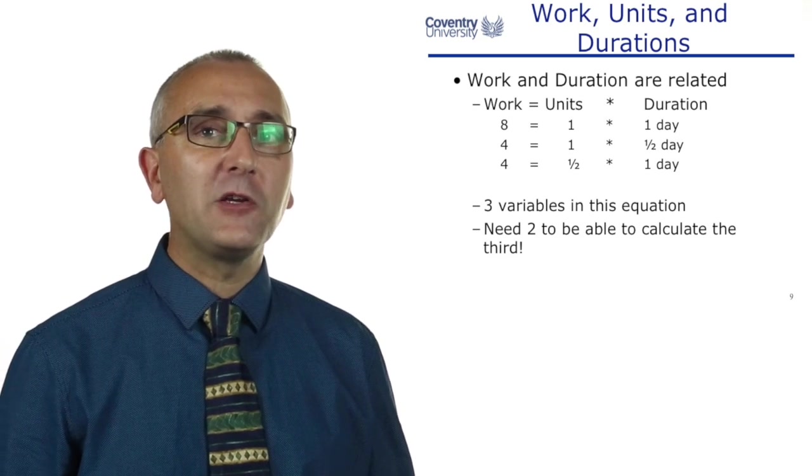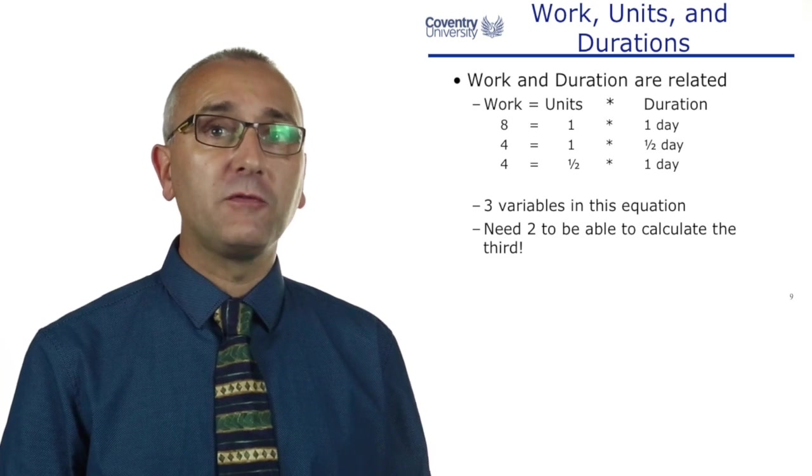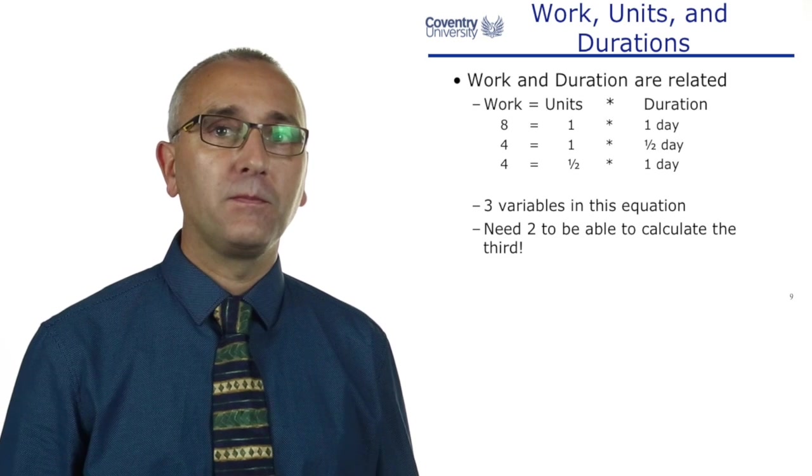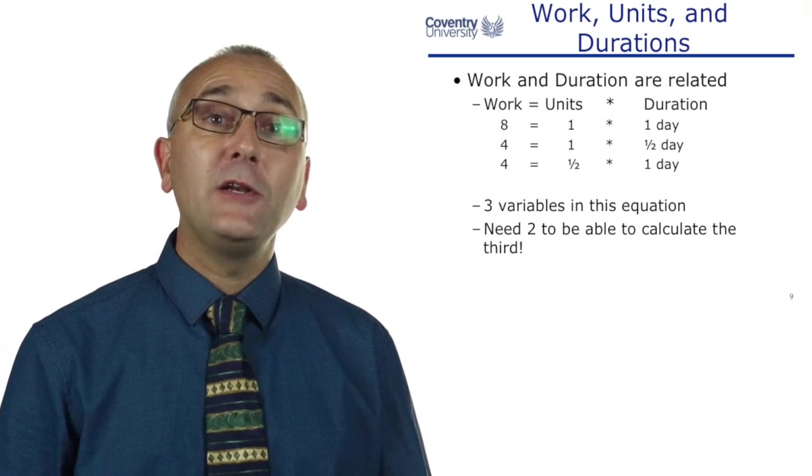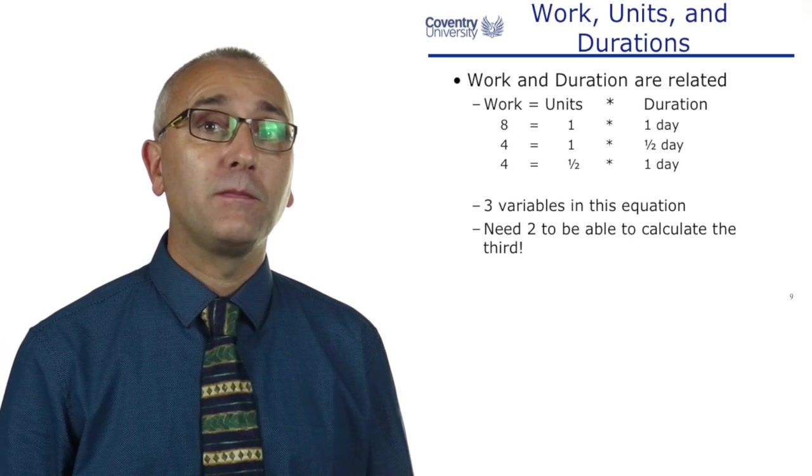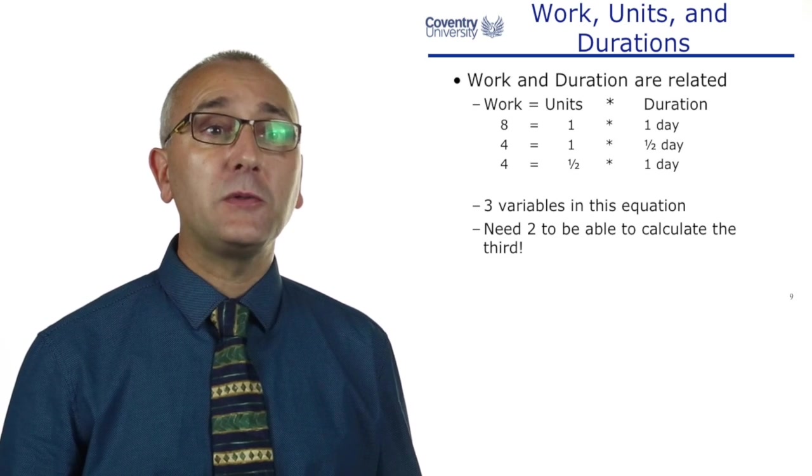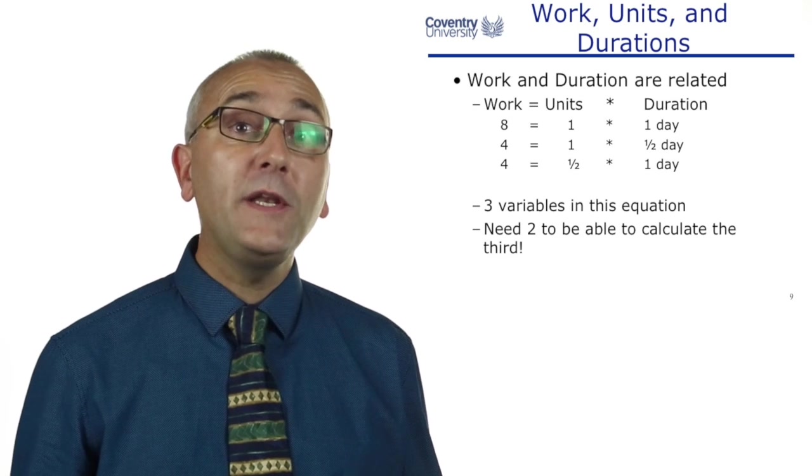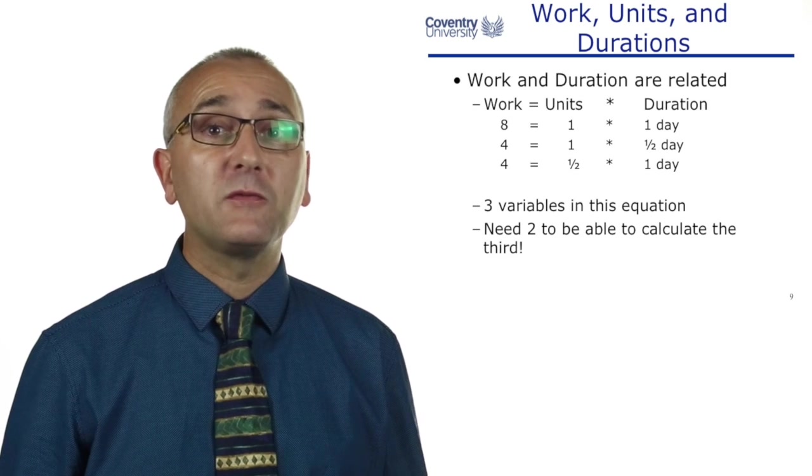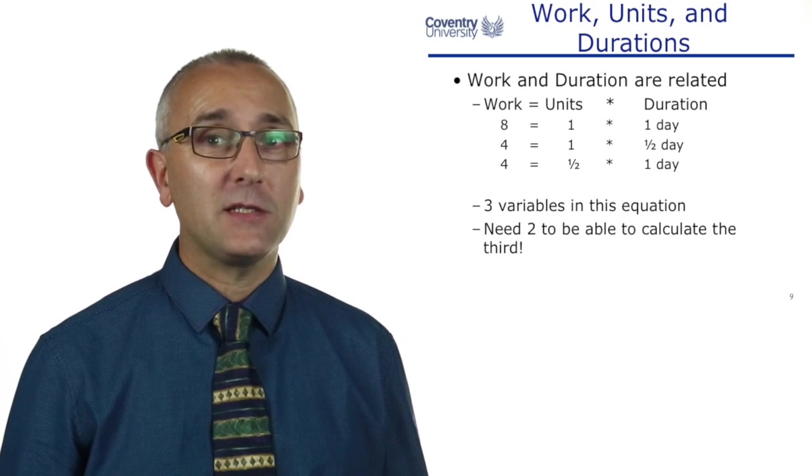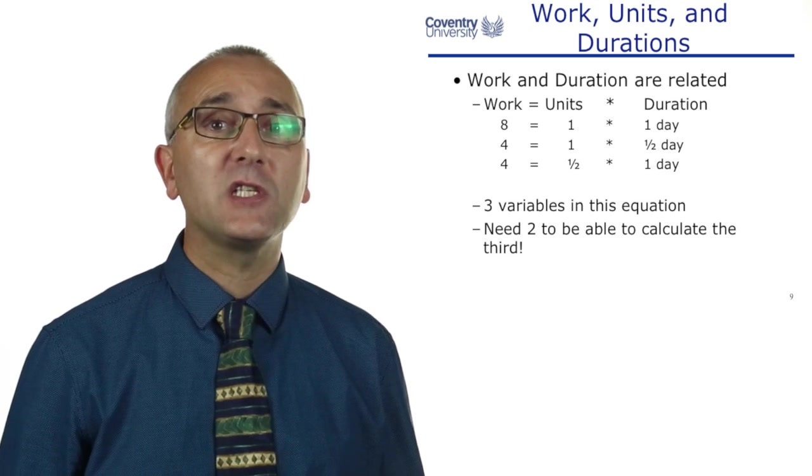Now there are three variables in this equation: the work, the number of units of the resource, and the duration. We need to know at least two of those different variables in order to calculate the third. For instance, if somebody says it's four hours of work and I'm going to spend half a day on it, we know that they're going to be full time on it, 100%. Or they might say it's four hours of work, it's going to take me a week to finish it, which tells us they're not putting their full effort onto the task.